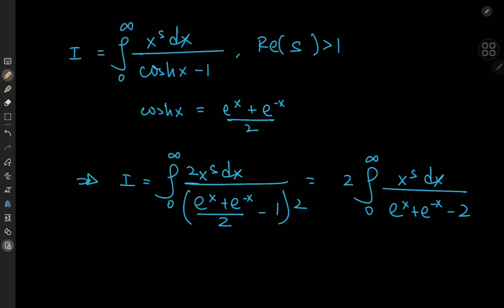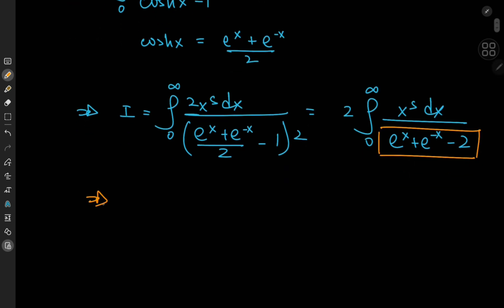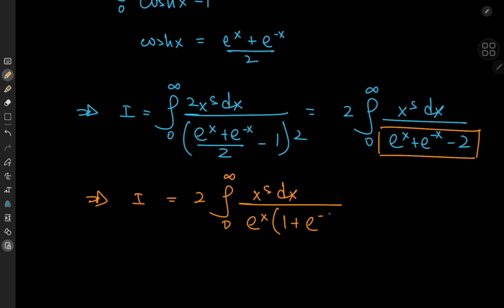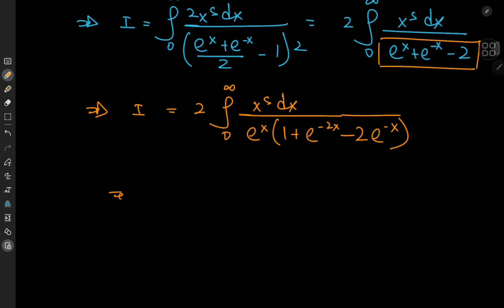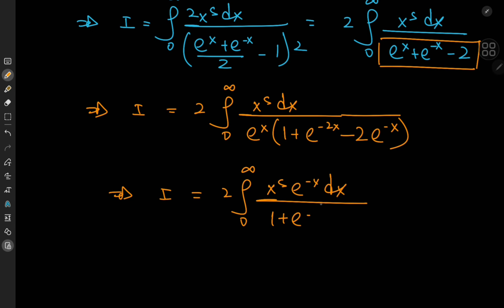A look at the denominator motivates us to apply a completing-the-square approach, so we factor out an e^x term. That gives I equal to twice the integral from 0 to infinity of x to the s dx divided by e^x, times 1 plus e^(-2x) minus 2·e^(-x). So I equals twice the integral from 0 to infinity of x^s · e^(-x) dx divided by 1 plus e^(-2x) minus 2·e^(-x).